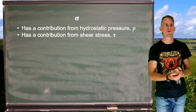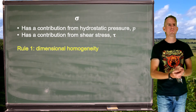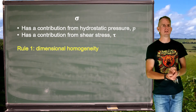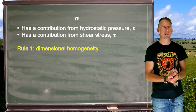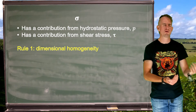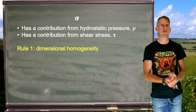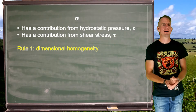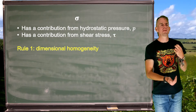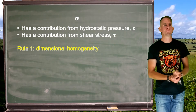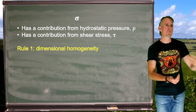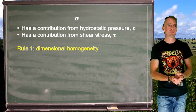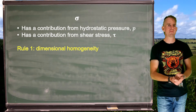Let's remember our three rules. Rule number one: dimensional homogeneity. Pressure is in newtons per square metre. Stress is in newtons per square metre. So from a dimensional standpoint, adding pressures to stresses is just fine — we're happy with that.